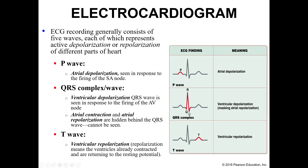After the QRS, we move on to the T wave, which is ventricular repolarization. If your ventricles are repolarizing, that also means they have already contracted and are returning to resting potential. So we are depolarizing the atria, depolarizing the ventricles and contracting the atria, then contracting the ventricles, and then repolarizing the ventricles. There's a lot going on here.